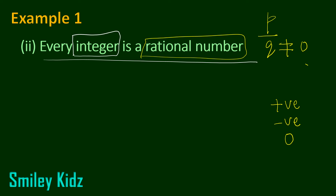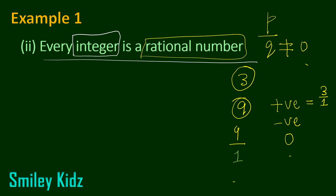Since integers are a collection of positive numbers, negative numbers, and 0, let's take an example of each and see whether they can be expressed in the form of P by Q. First, we have positive numbers. Let's take 3 — this is a positive number and can be expressed in the form P by Q as 3 by 1. So any positive integer, like 9 expressed as 9 by 1, can be expressed as a rational number.